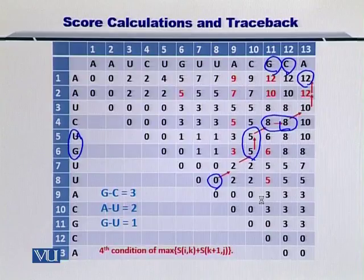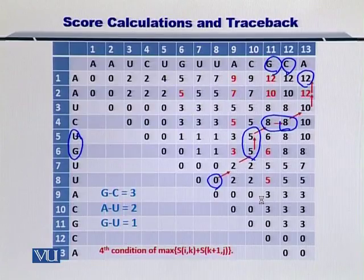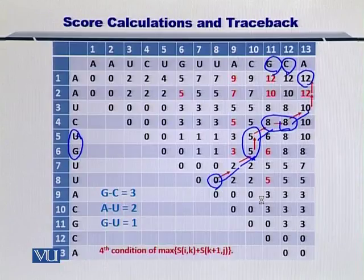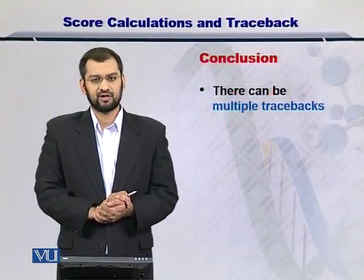Therefore, you need to know that bulges should be minimized. Hence, an ideal traceback would essentially only comprise of diagonals. But as you know, there are situations where two nucleotides cannot be coupled and are therefore not in the diagonal. Hence, you have to introduce that nucleotide as a bulge. Once you have completed the traceback, then you are ready to look at the secondary structure.